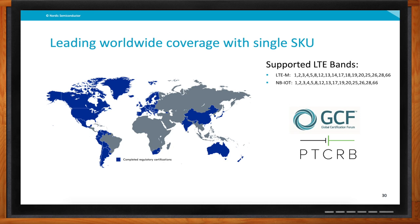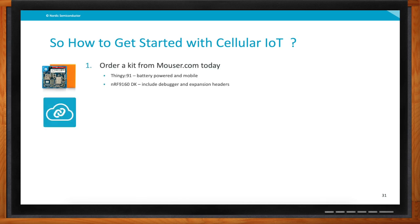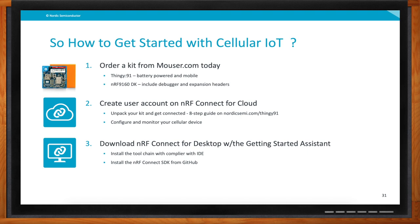So if you're ready to get rolling on a cellular IoT design: first, order a kit to get some hardware. Second, create an account on NRF Connect for Cloud, because as you unpack your kit and follow our guide on nordic.com, you'll need to log in, configure your first device, and activate your SIM cards. Then, if you want to get into real development, download NRF Connect for Desktop to get access to the compiler, download the SDK, and you have an IDE where you can develop and write real code.